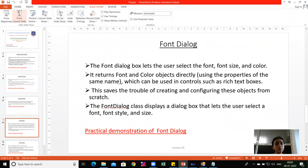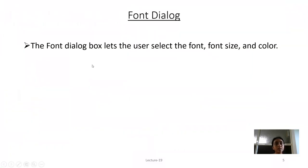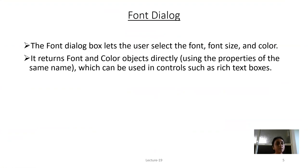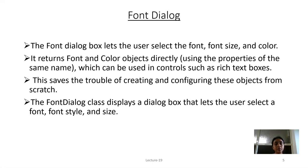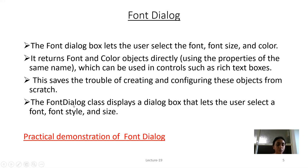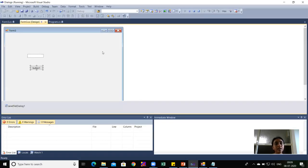The fourth dialog is FontDialog. The Font Dialog box lets the user select the font, font size, and color. It returns Font and Color objects directly using the properties of the same name, which can be used in controls such as RichTextBoxes. The FontDialog class displays a dialog box to let the user select font, font style, and font size.